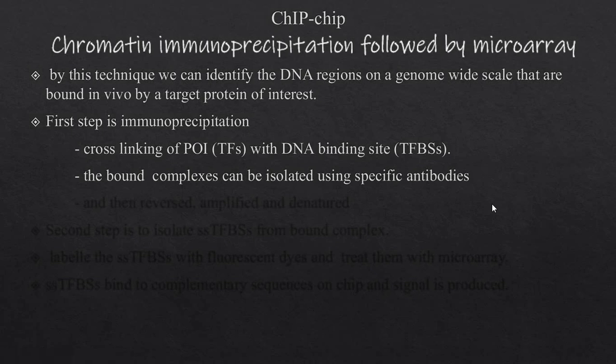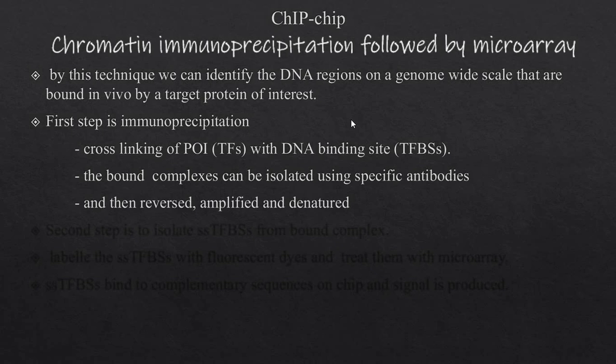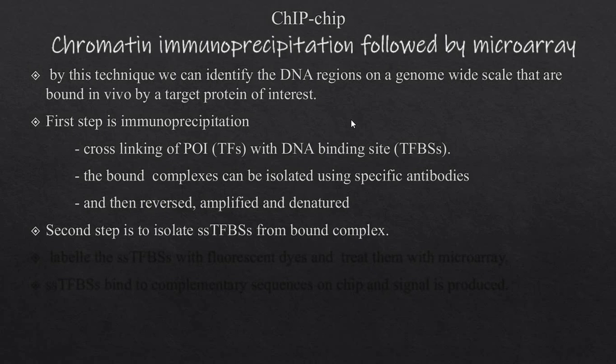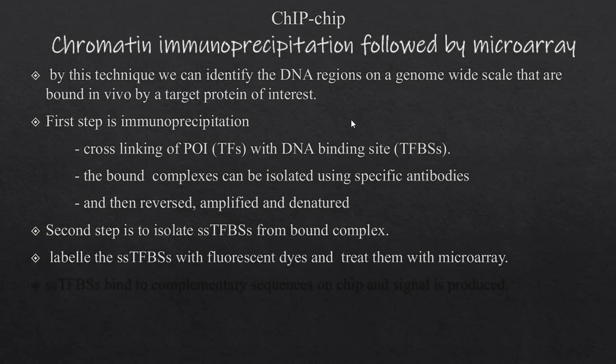We then have the bound complexes, which are isolated using antibodies. The protein of interest binds to its sites, and we capture it in complex form using antibodies. Then we reverse the cross-links, separate the two, amplify, and denature. The second step is to isolate the single-stranded transcription factor binding sites from the bound complex — we isolate the single-stranded binding site from the protein.